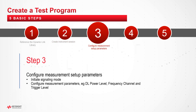Once the instrument connection is established, we can start setting up the system in signaling mode and configure the test parameters of the measurements to be performed in the next step. For example, the DR power level for receiver PER test, or the frequency channel and trigger level for transmitter power output measurement.